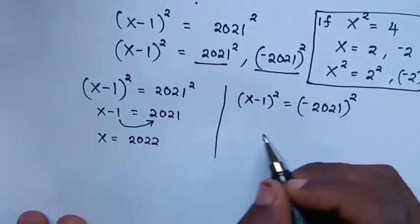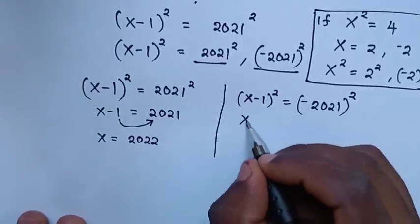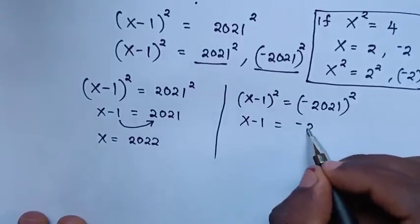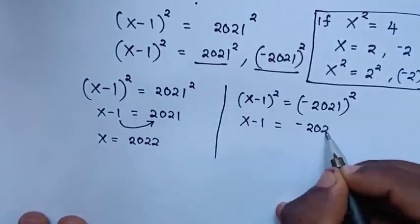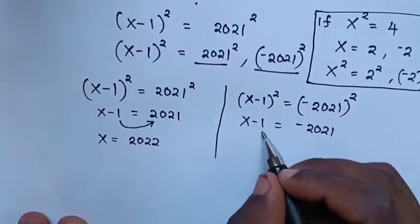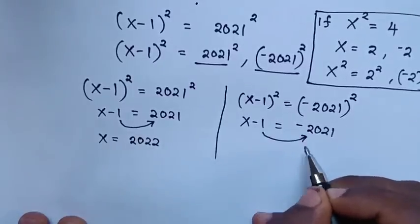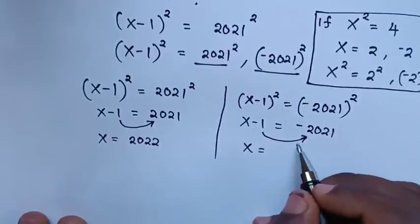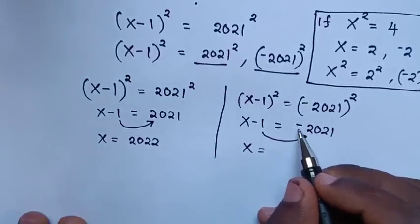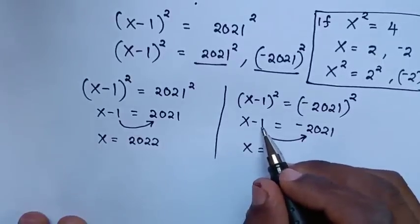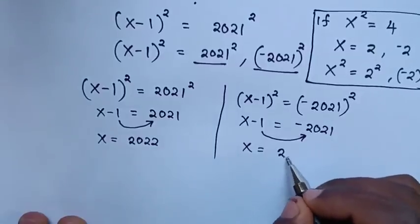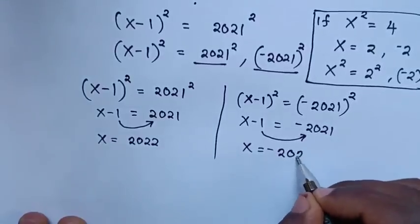For the second case, when we apply square root to both sides, it will be x - 1 = -2021. Taking -1 to the right side, x = -2021 + 1 = -2020.